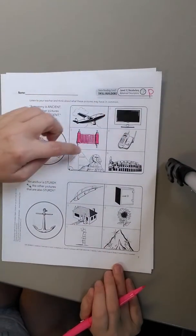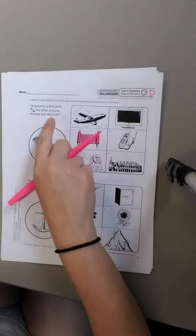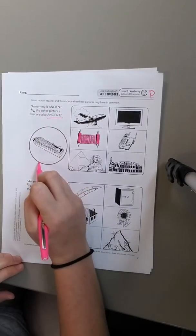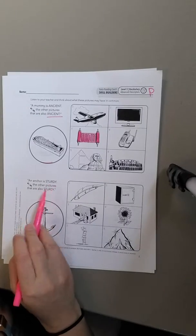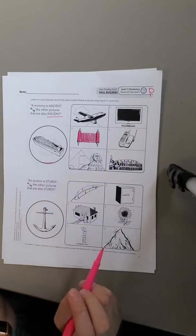So you're going to go ahead and do that for the rest of these and figure out which ones are the same as ancient, like the mummy, okay? This one down here says, an anchor is sturdy. Color the pictures that are also sturdy.